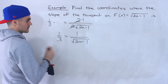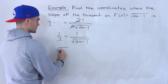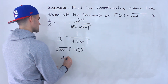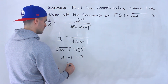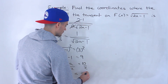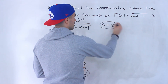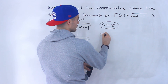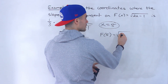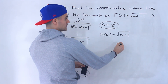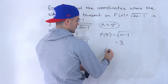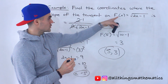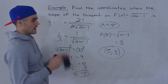Now we set that equal to 1 over 3 and solve. Cross-multiplying gives the square root of 2a minus 1 equals 3. Squaring both sides: 2a minus 1 equals 9, so 2a equals 10, and a equals 5. That's the x value. They want the full coordinate, so we find f of 5: 2 times 5 is 10, minus 1 is 9, and the square root of 9 is 3. So the coordinate is (5, 3). At this point on the function, the slope of the tangent equals 1 over 3.